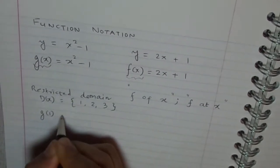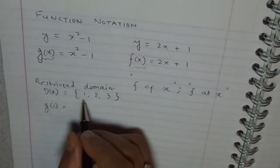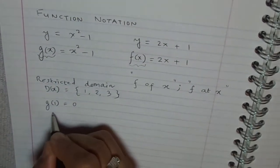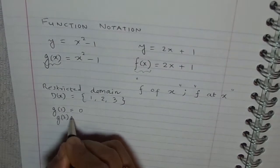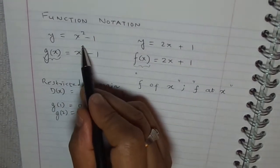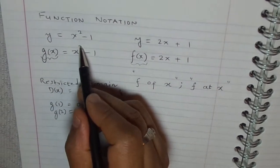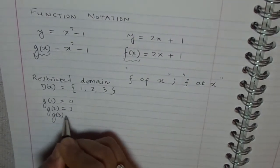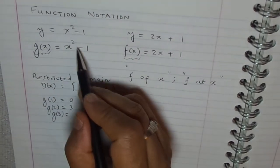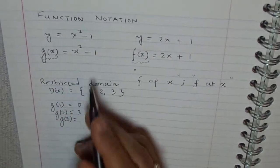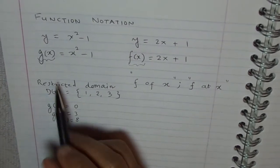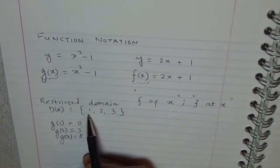What is g of 1? g of 1 is 1 squared minus 1, which is 0. What is g of 2? g of 2 is 2 squared minus 1, 4 minus 1, 3. How about g of 3? g of 3 will be 3 squared minus 1, 9 minus 1, 8.